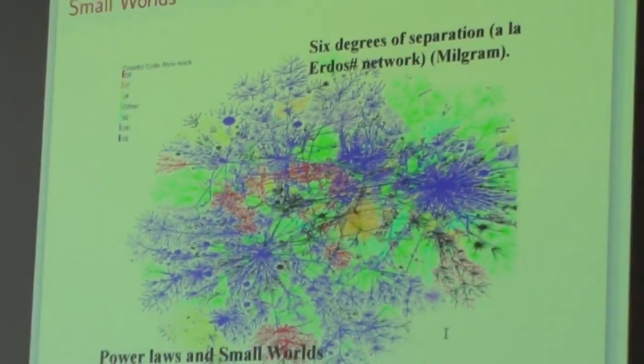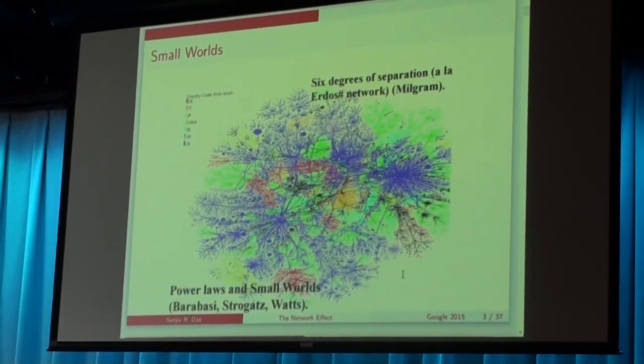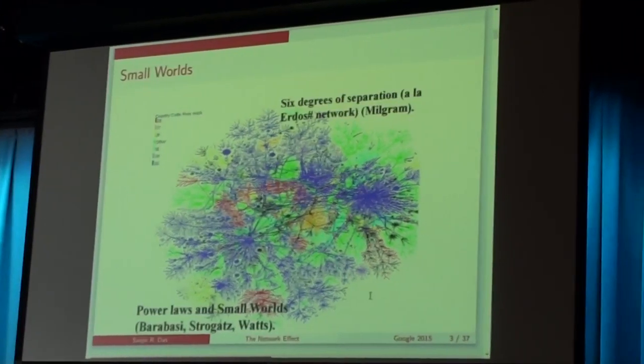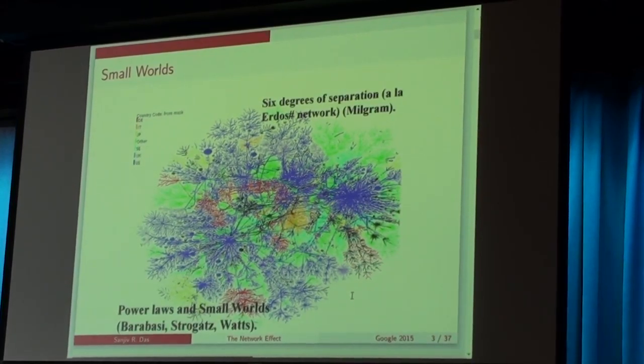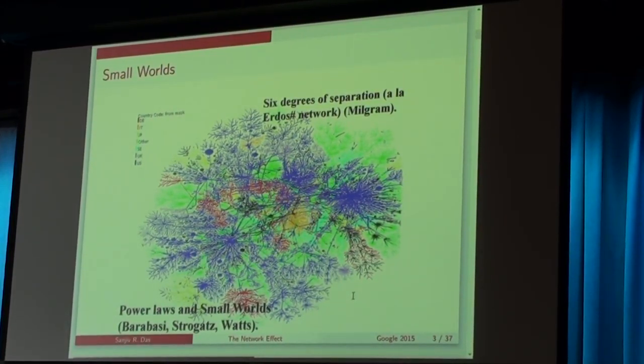That's a picture of the internet. And it has this classic structure where there are hubs, and there are a lot of small nodes, and plenty of stuff gets distributed very rapidly through these sort of central hubs. The world is a smaller place. It's getting smaller and smaller. You've all heard it's a small world.